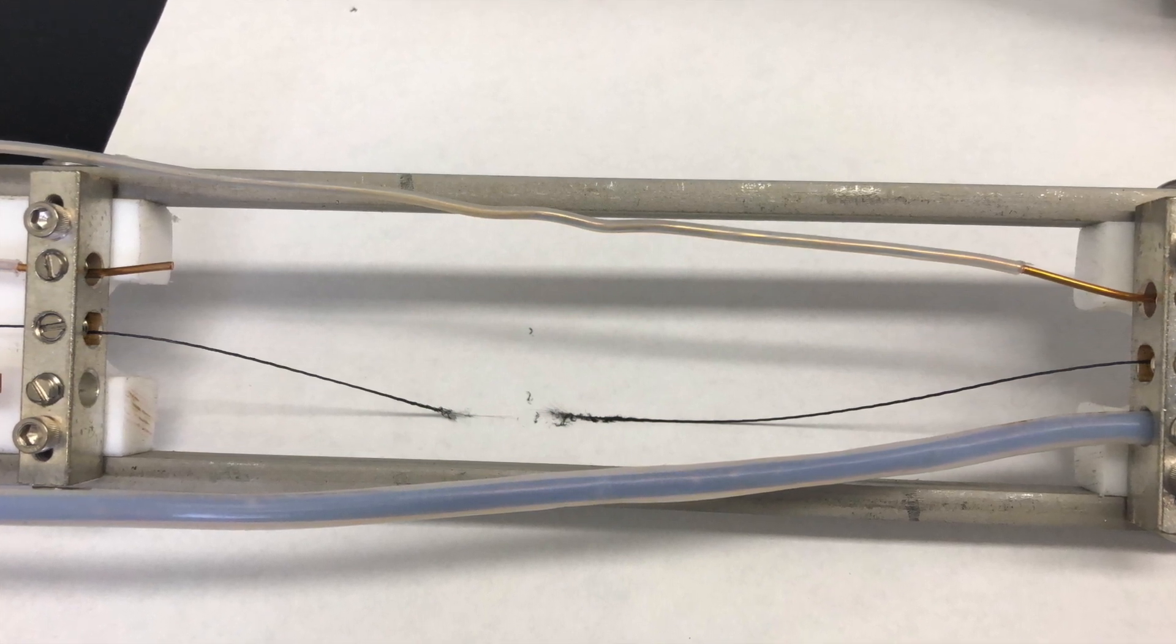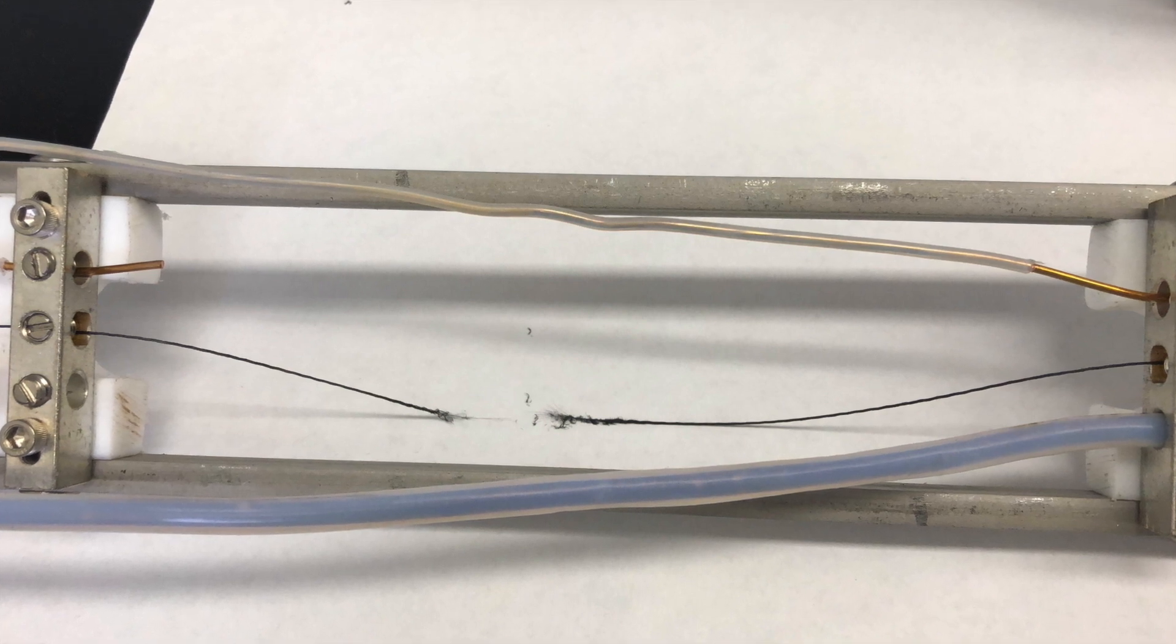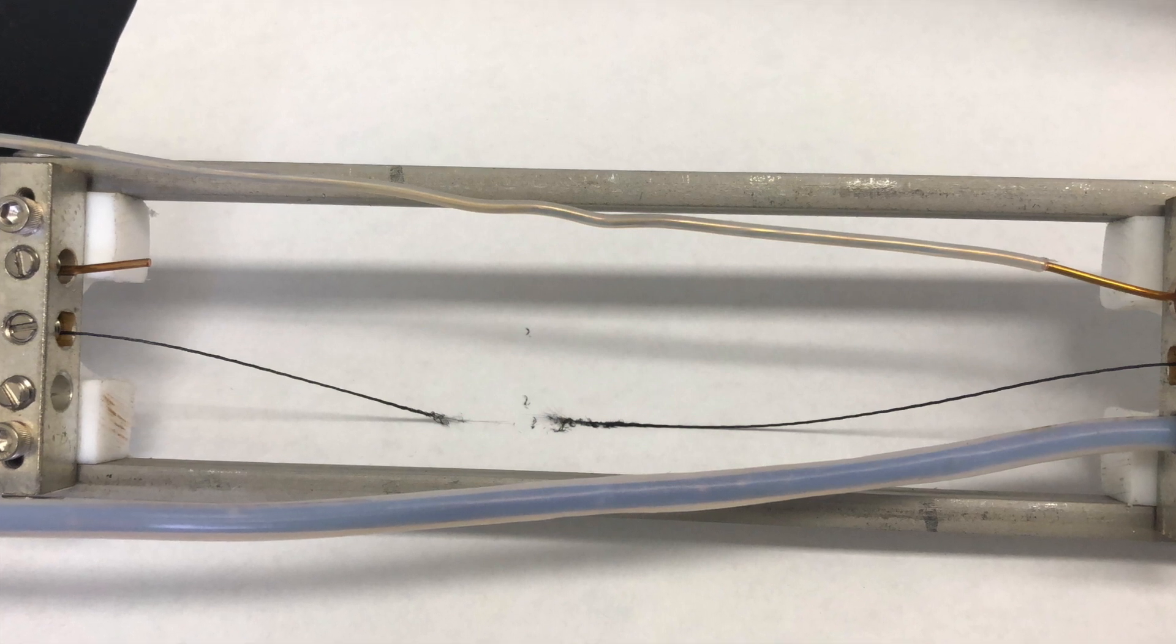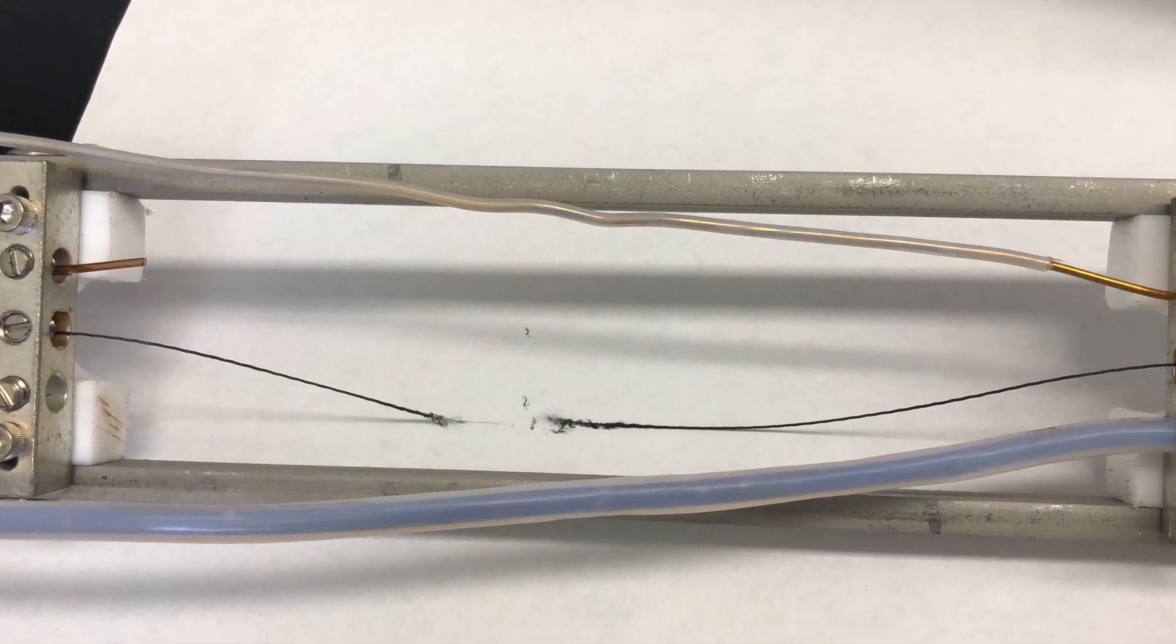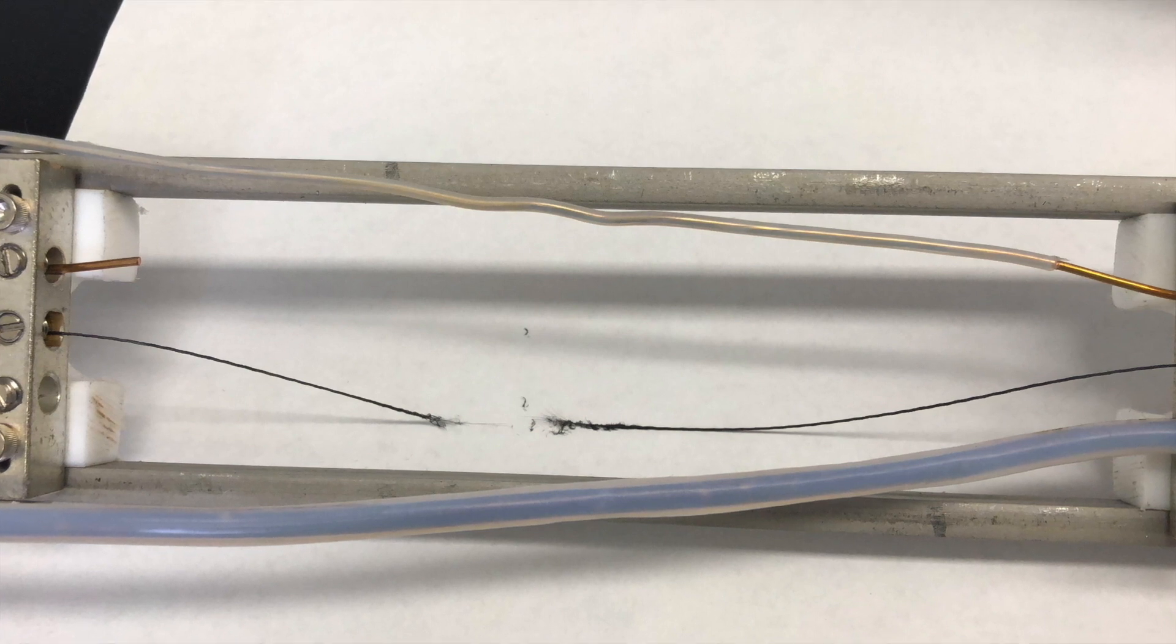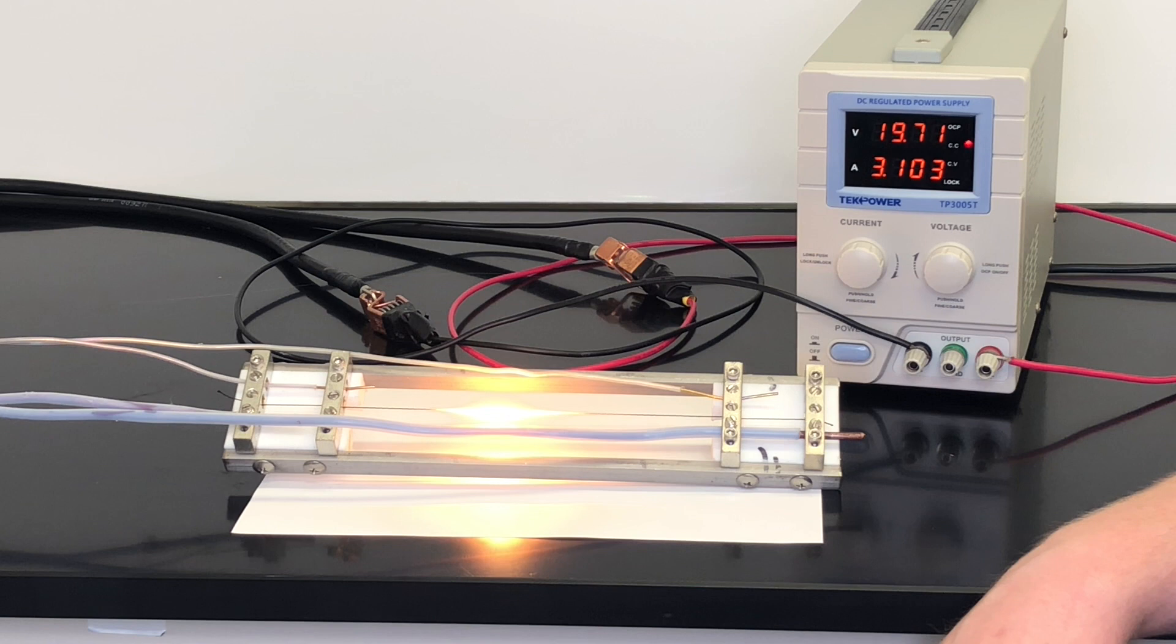Each time we increase the electric current, we are increasing the temperature of the yarn by increasing the amount of heat produced by that current. Eventually, a current will be reached at which the temperature in part of the yarn is 150 degrees or higher, at which point that portion of the yarn will begin to lose dopant and increase in resistance, which increases the temperature further, leading to a runaway heating effect.